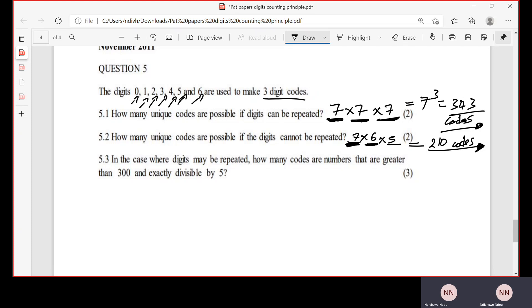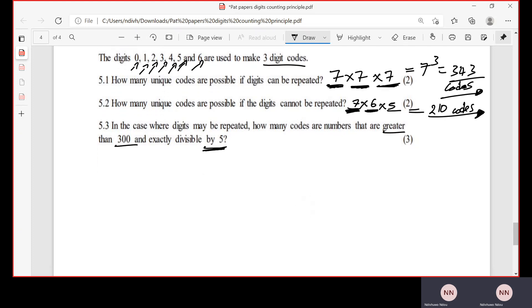5.3: In the case where digits may be repeated, how many codes are numbers that are greater than 300 and exactly divisible by 5? Don't forget that digits may be repeated in this case, so we can repeat digits. Let's just do this. So we want